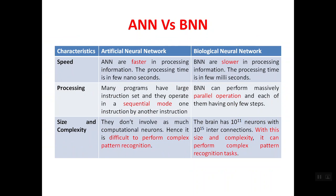The second characteristic is processing. Many programs in artificial neural networks have a large instruction set, and each instruction has to be executed one by one — that means it is a sequential mode of operation. Biological neural networks, on the other hand, can perform processing in a parallel manner, and massively parallel operation can be done due to the many parallel connections.